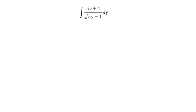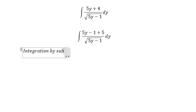In here we need to put negative 1, so we add plus 5 because 5 minus 1 gives us 4. Now you can use integration by substitution, so we set u equal to this square root.